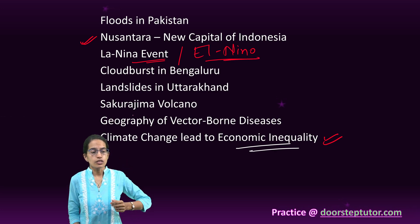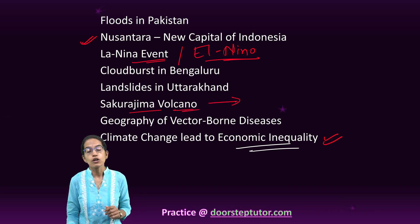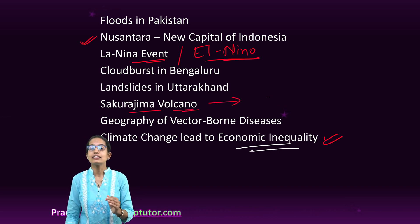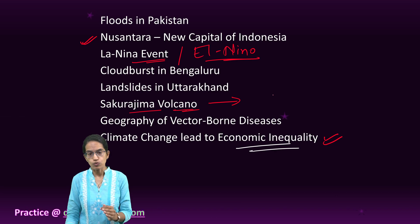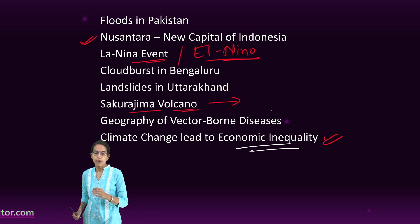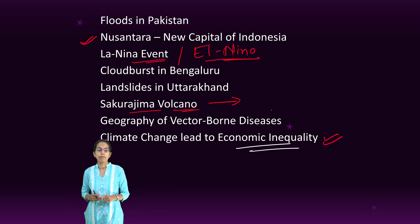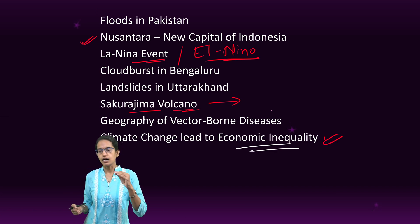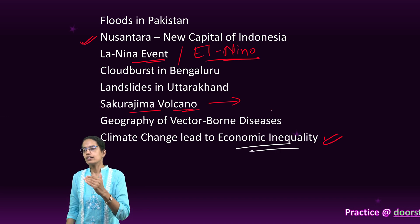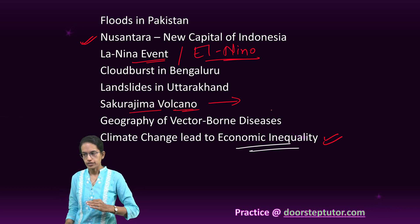The Sakurajima volcano is one of the active volcanoes of Japan and it is a stratovolcano. Two important things to note: it is one of the active volcanoes of Japan, it is a stratovolcano, and it is considered one of the very dangerous volcanoes.